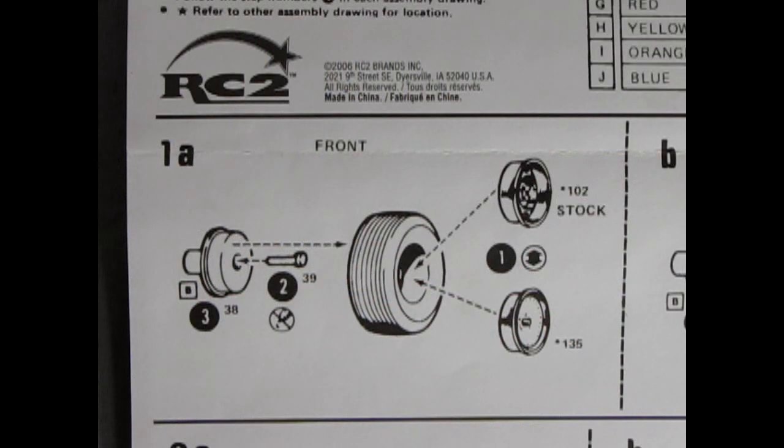Our first assembly step is the wheels and tires and as you can see you get these nice stock wheels as well as these racing style wheels, and then we have our tire and our wheel back and on the front it is held together with this little plastic pin.